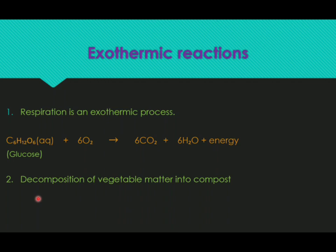Decomposition of vegetable matter into compost is also an exothermic reaction. The vegetable matter breaks down into smaller substances, and this decomposition can occur through bacteria or by burning. During decomposition of vegetable matter, a lot of heat energy is released. Therefore, we call this an exothermic reaction.